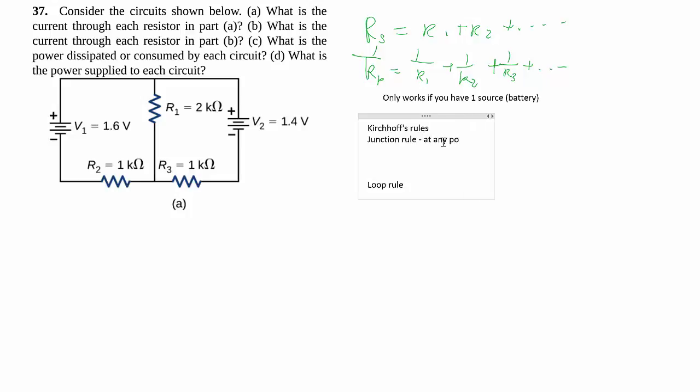So the junction rule says basically any point in the circuit, usually we pick the point where you have branching happening, such as this point, all the current coming into that point is equal to all the current going out of that point. Or you can, if you wish to get the zero on the one side, you can say current in minus current out equals zero.